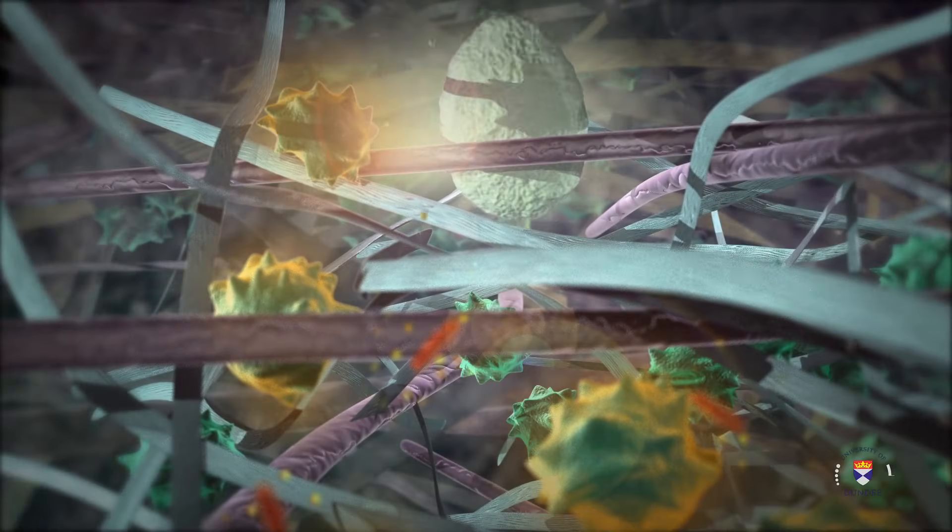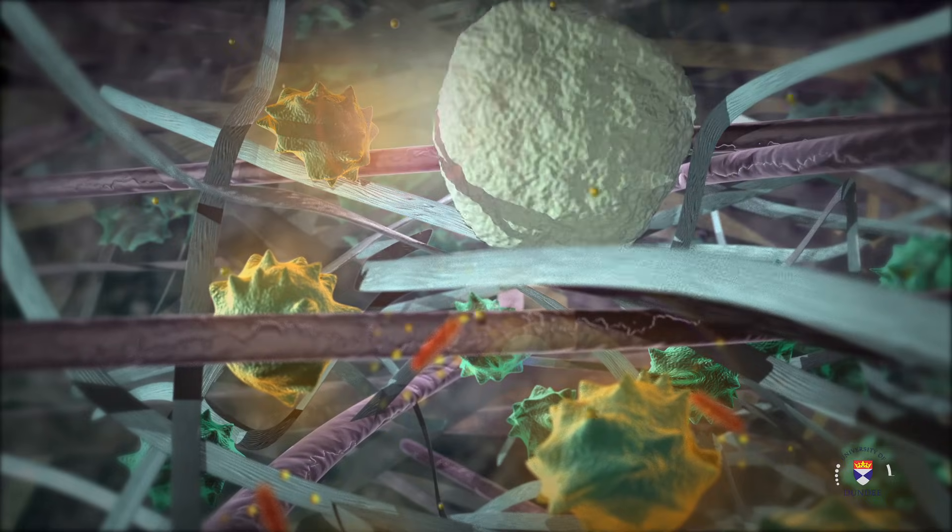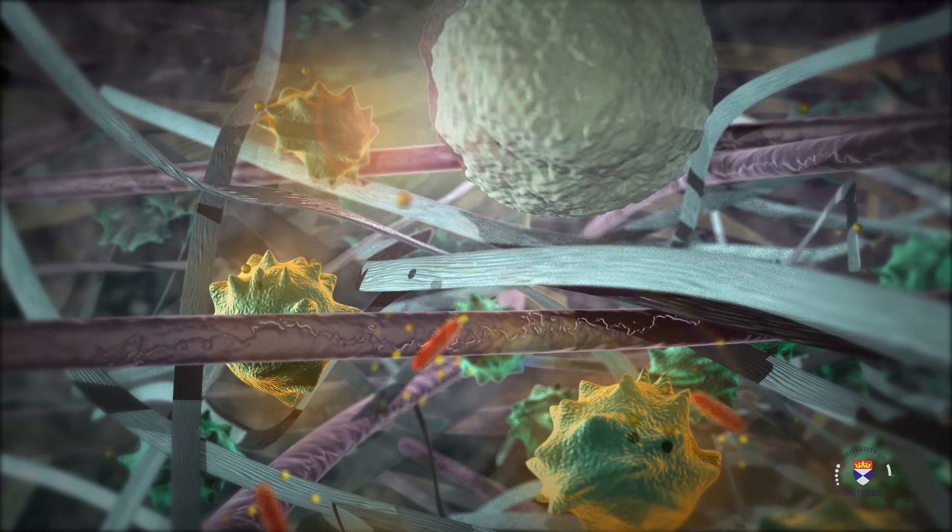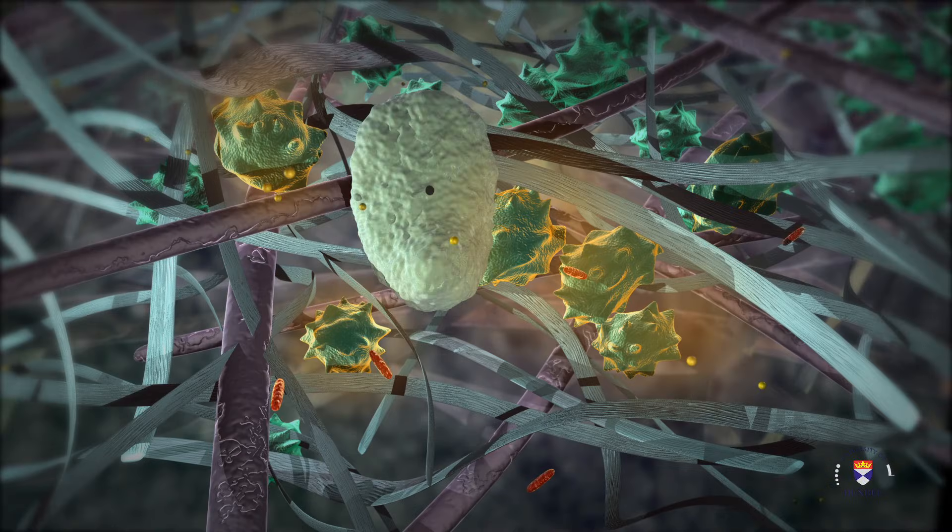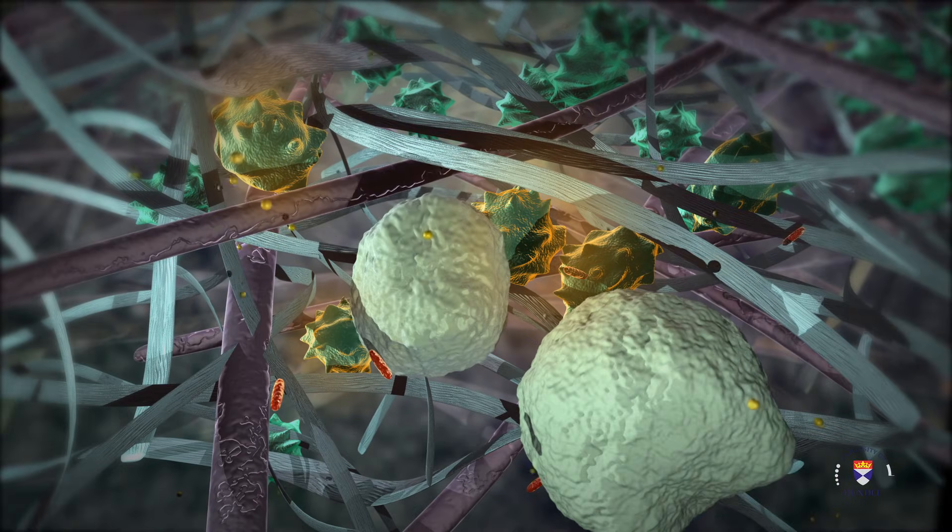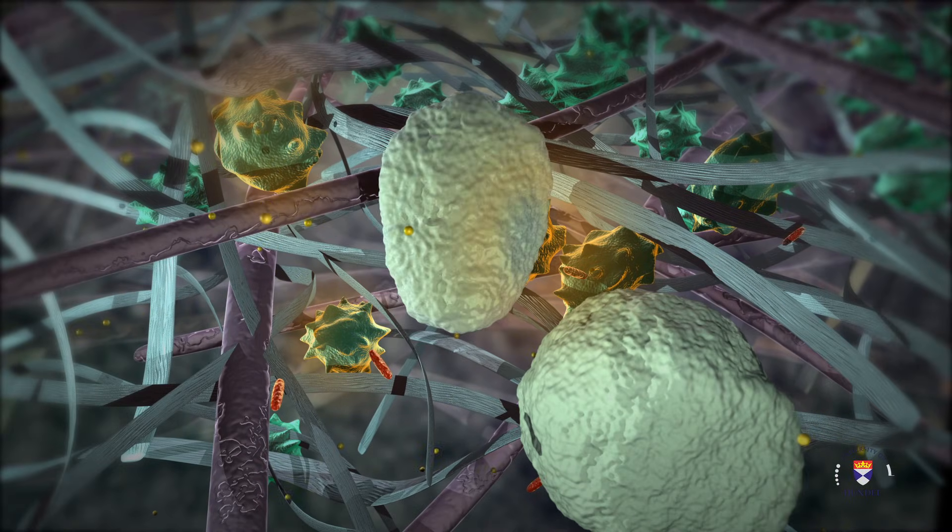Once the leukocyte arrives at the site of injury, it goes into action to clear and prevent infection by releasing cytokines or phagocytosing material. Neutrophils, the main leukocyte present in acute inflammation, primarily act through phagocytosis.